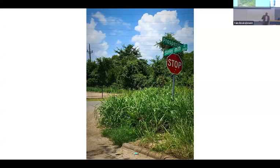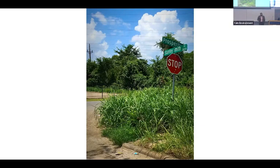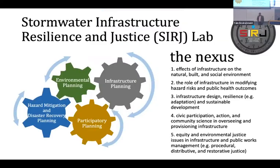I noticed that the stormwater infrastructure in my community — the ditches and inlets — were always filled with trash and debris with pooling water surrounding these assets. When I traveled across town to predominantly whiter and wealthier neighborhoods, there was a stark difference in the quality of the built environment and infrastructure. From that point, I began asking what it was about my neighborhood that created these circumstances, and that intuition is what fundamentally led me to my current research program. At the University of Maryland, I founded in 2019 and direct the Stormwater Infrastructure Resilience and Justice Lab.